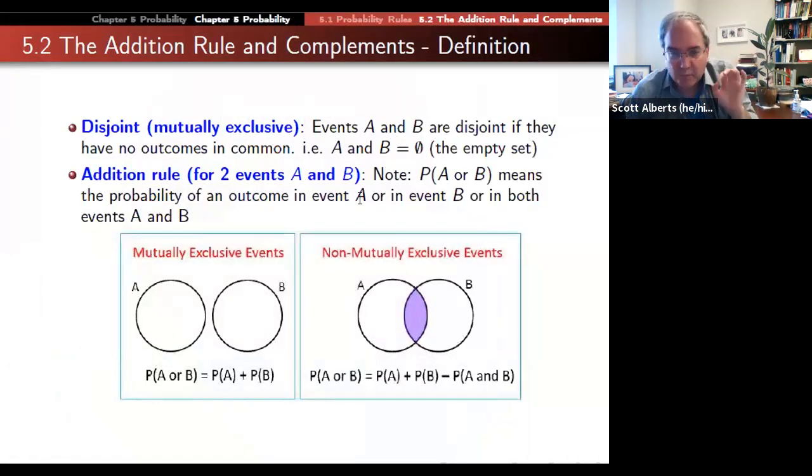What we're going to be thinking about here is the idea of how different events stack up as we think about probability. The first one is this idea of events being mutually exclusive. Mutually exclusive events are ones where both of them can't happen.